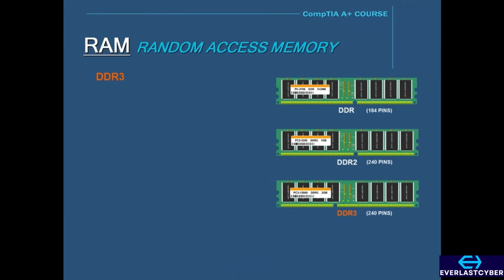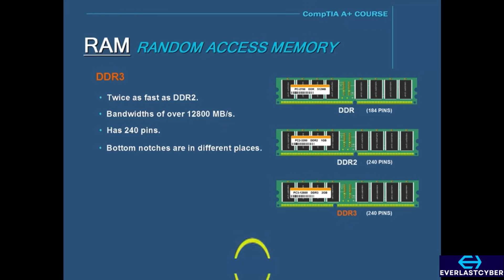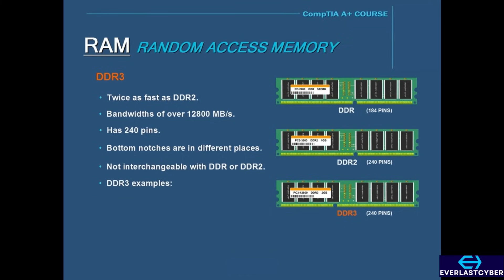The latest RAM technology is called DDR3. DDR3 is twice as fast as DDR2, with a bandwidth of over 12,800 MB per second. Like DDR2, a DDR3 DIMM also has 240 pins, but the notches in the DIMMs are in different places, so you can't put a DDR3 DIMM in a RAM slot made for DDR2. Motherboards are made to support a certain type of memory, so you can't mix DDR1, 2, or 3 on the same motherboard. Some examples of DDR3 are PC3-8500 and PC3-12800.